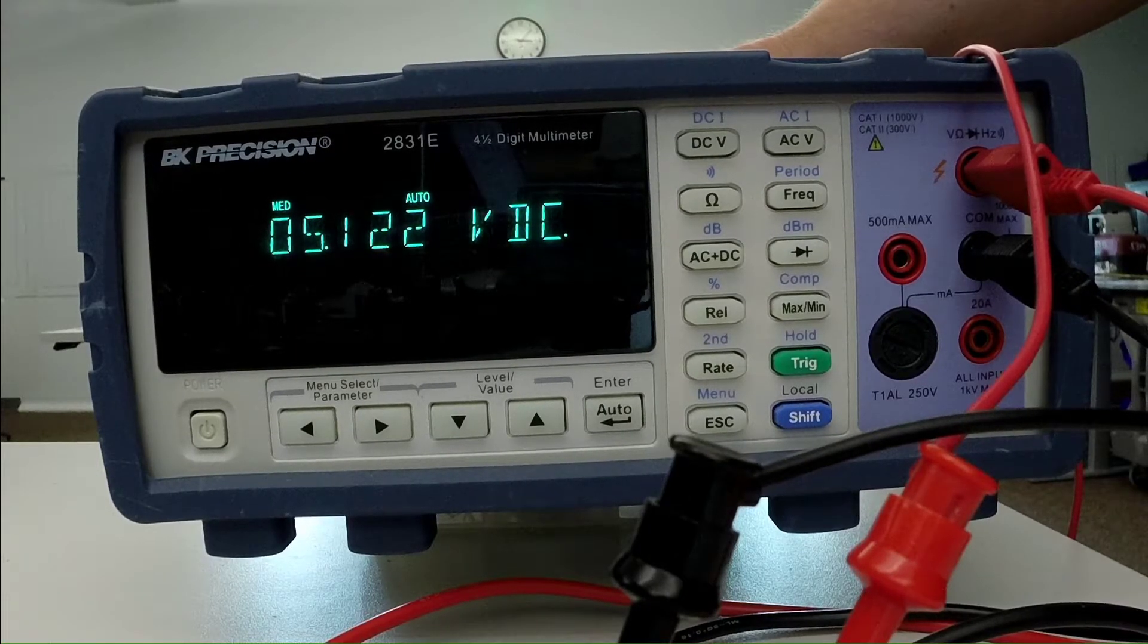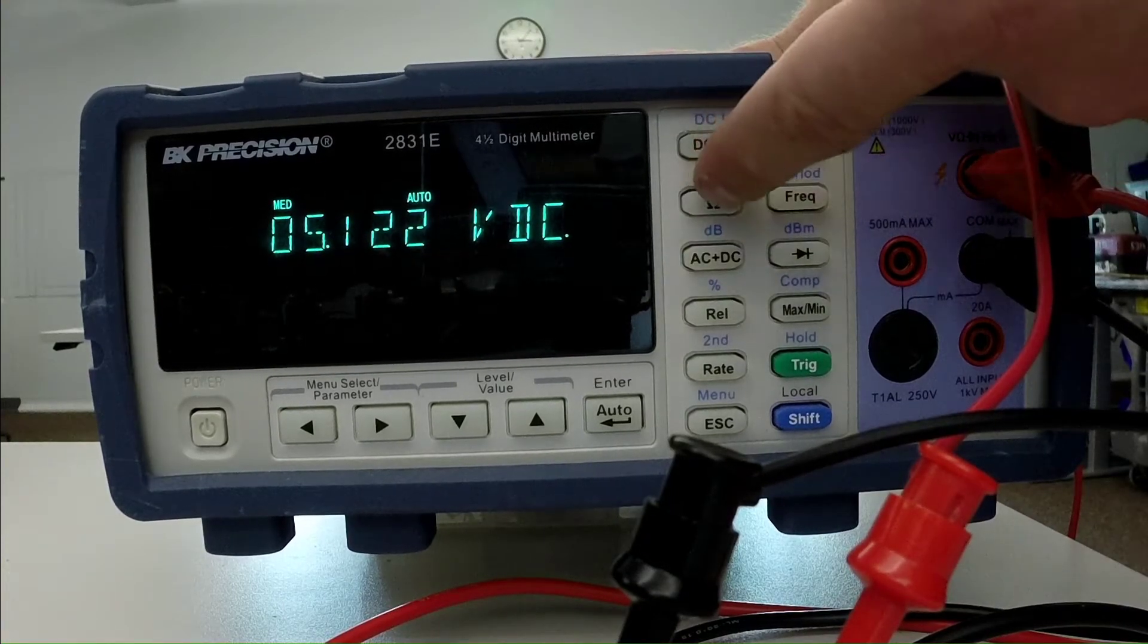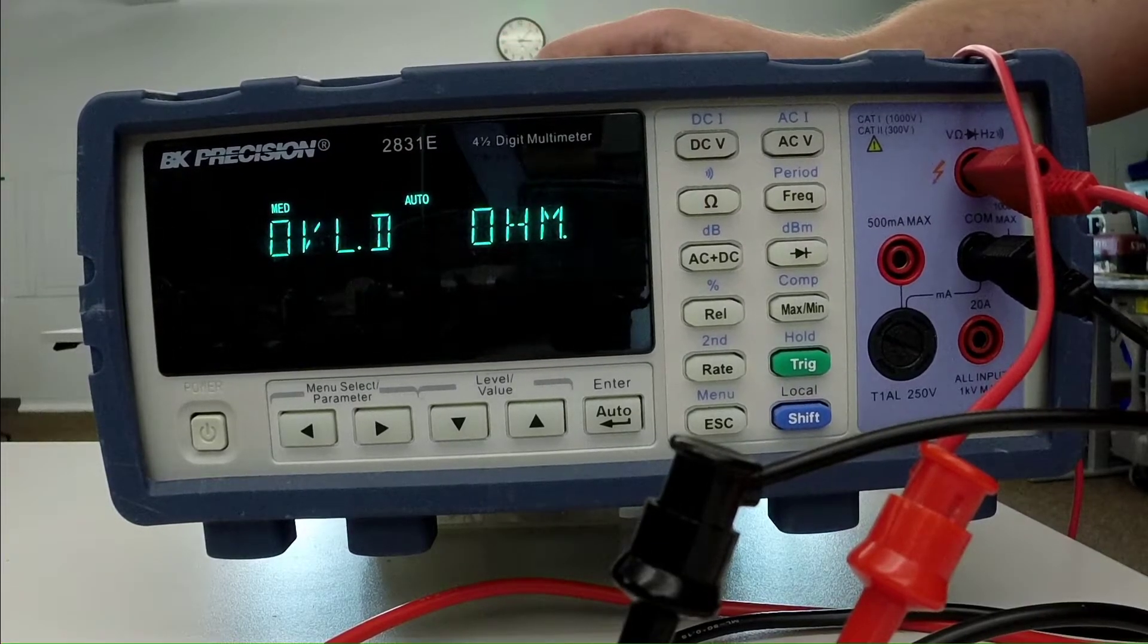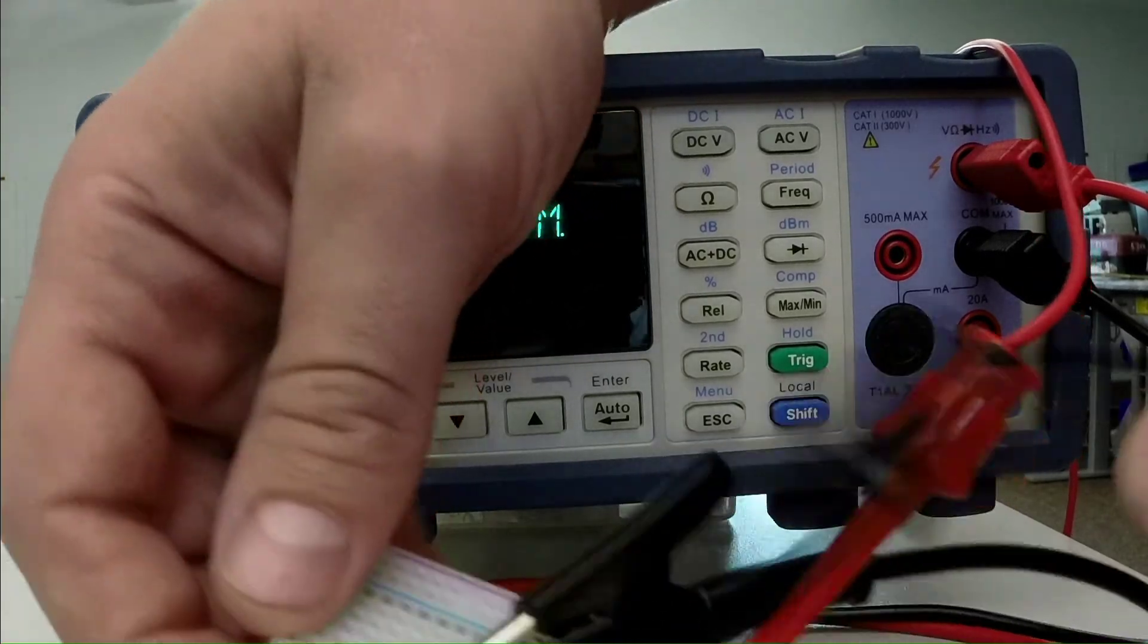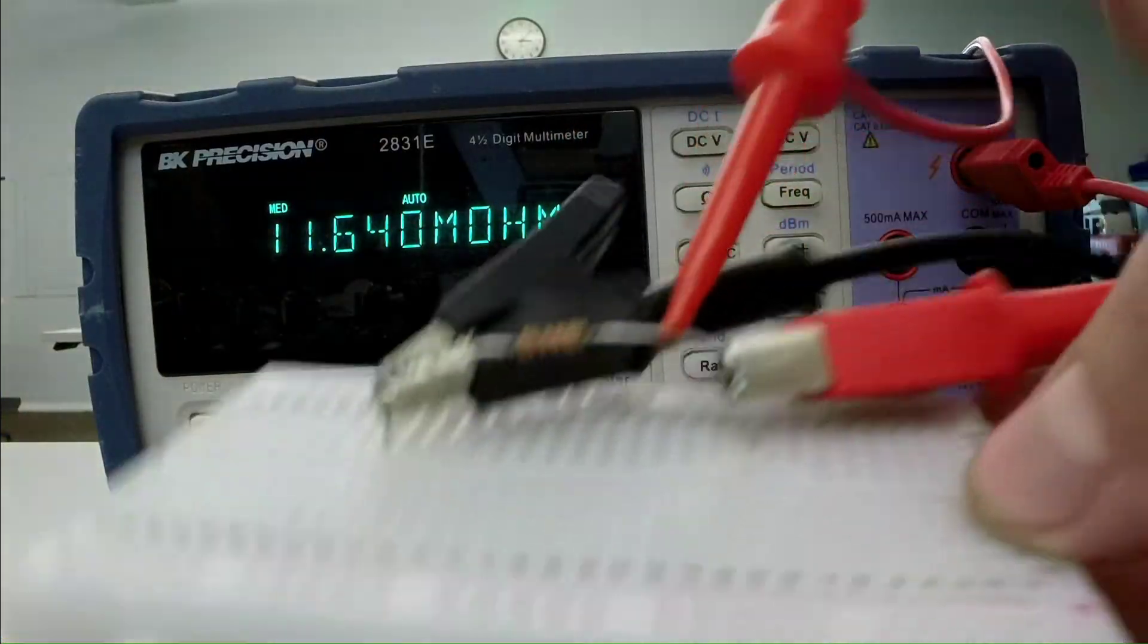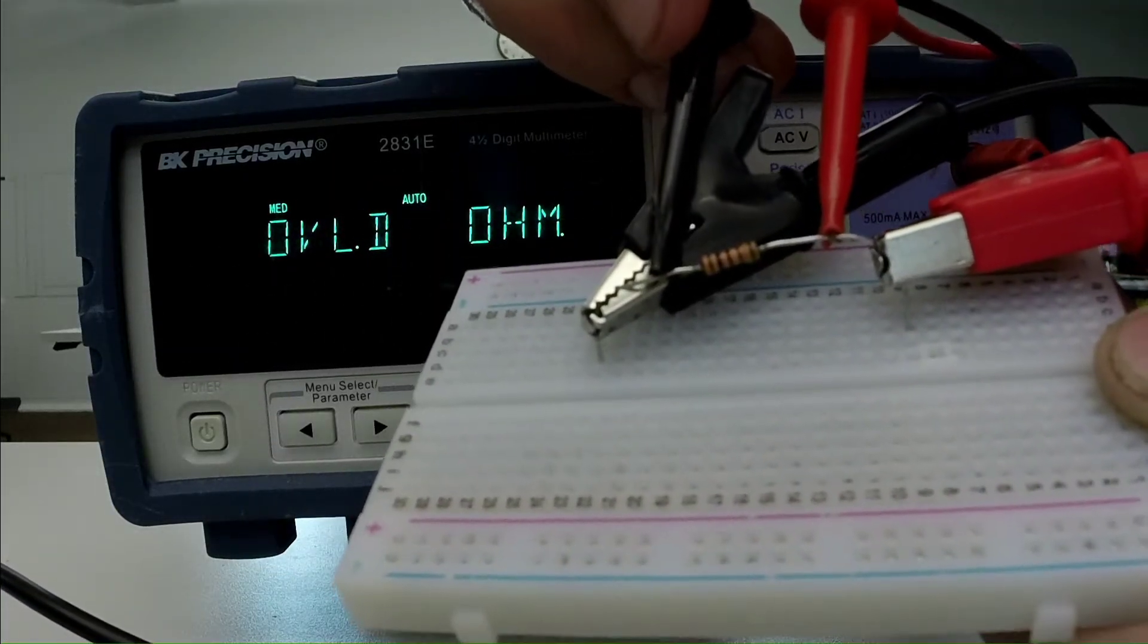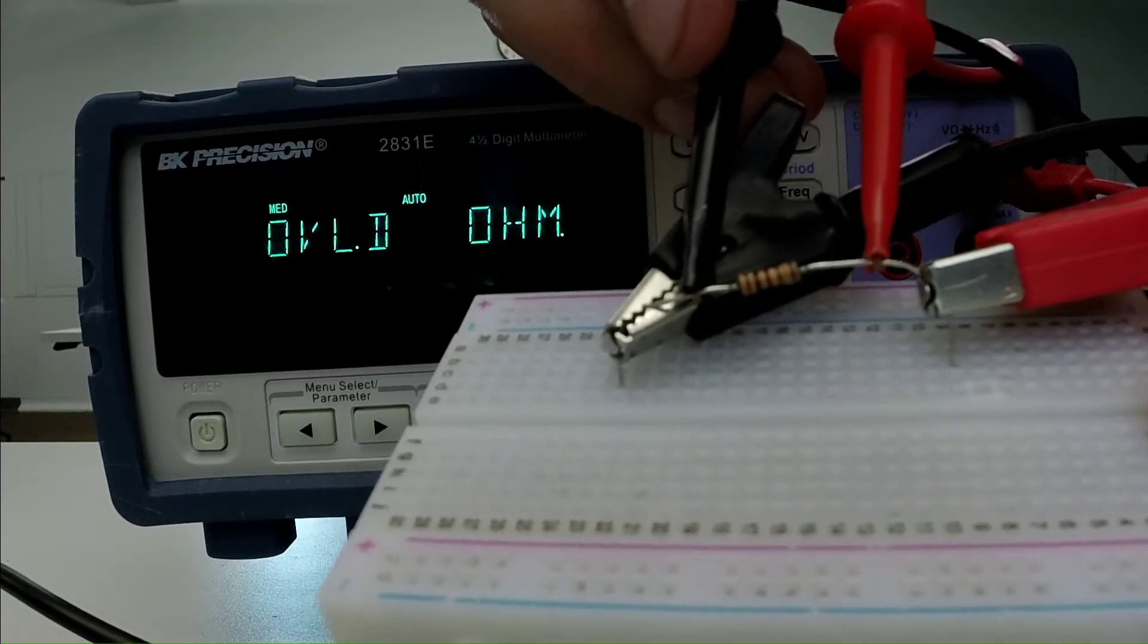Now we could also do a resistance measurement by switching over to ohms. Now you'll notice that I'm getting that overload error message again, even though I have my test leads connected across the resistor.